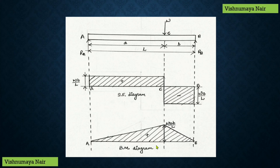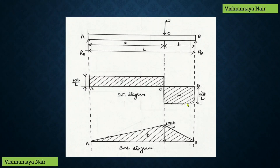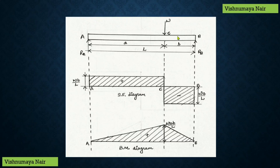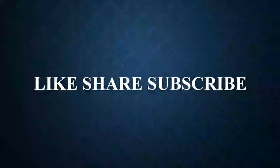This is the shear force and bending moment diagram of a simply supported beam with an eccentric point load. In the shear force diagram, SF = +WB/L between A and C, and SF = −WA/L between C and B. In the bending moment diagram, BM = WAB/L at C, and zero at both supports — increasing from A to C and decreasing from C to B. Please like, share, and subscribe. Thank you.